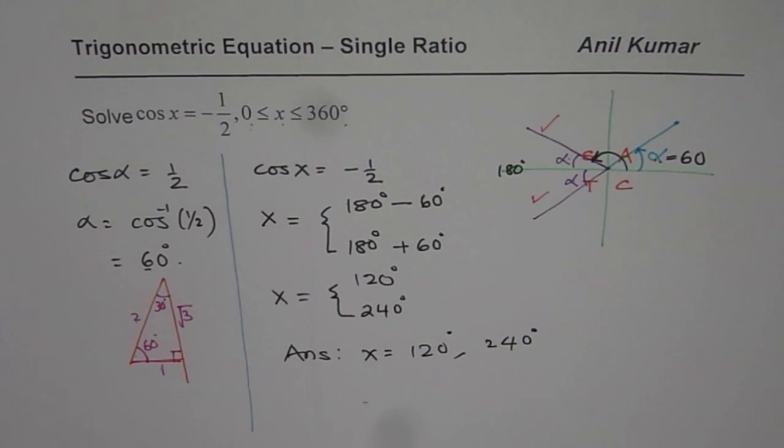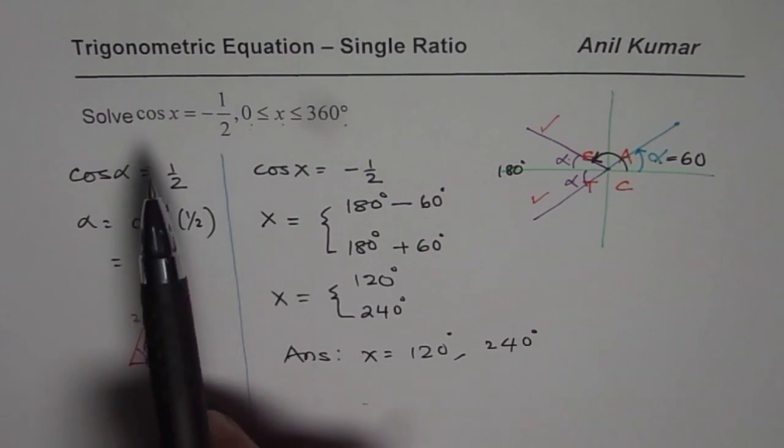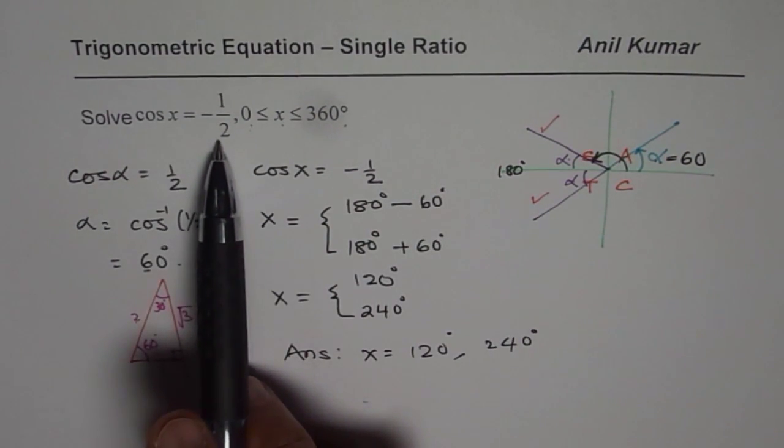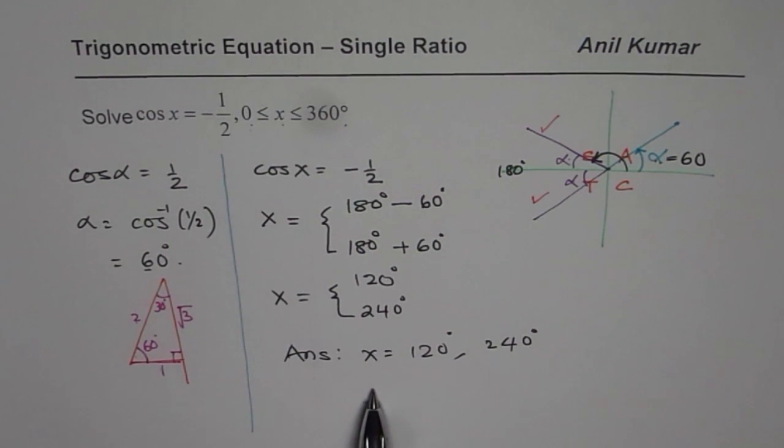So these are the steps to be followed to find solution of a trigonometric equation, simple as given to you in this particular example. Now if you understand these steps you should be in a position to answer complicated trigonometric equations also. Remember, in any equation ultimately you have to give solution for a ratio equals a number. So this method is to be followed for each and every equation when it comes to trigonometric equations.